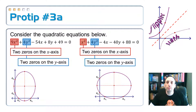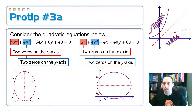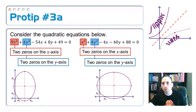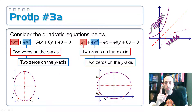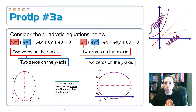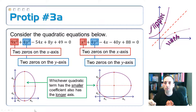Furthermore, I can tell which equation has a vertical or horizontal major axis. The one on the left has a vertical major axis — look at the equation: the y-squared term is vertical and has a coefficient of 4, which is smaller than 9. The second one has a horizontal major axis corresponding to the x-squared term, which has a coefficient of 1, smaller than the y-squared coefficient of 4. So whichever quadratic term has the smaller coefficient, that's the one associated with the major (longer) axis.